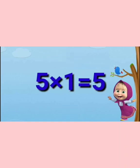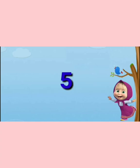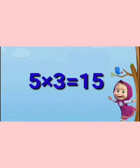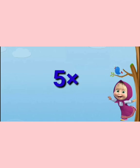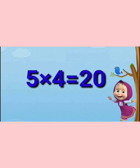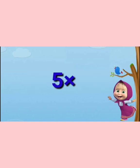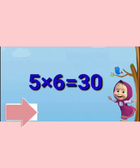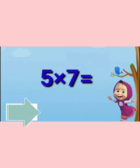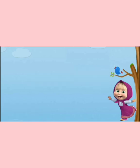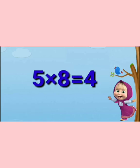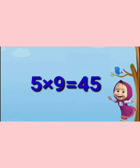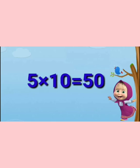Table of 5: 5 ones are 5, 5 twos are 10, 5 threes are 15, 5 fours are 20, 5 fives are 25, 5 sixes are 30, 5 sevens are 35, 5 eights are 40, 5 nines are 45, 5 tens are 50.